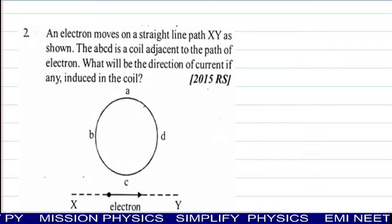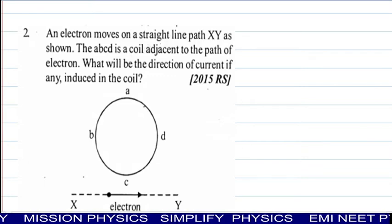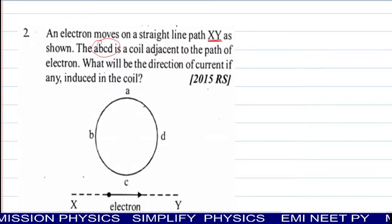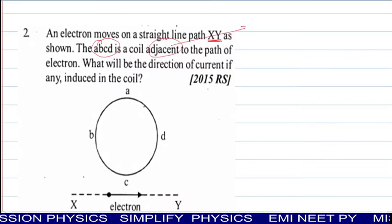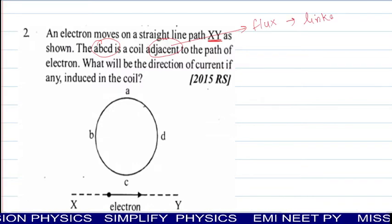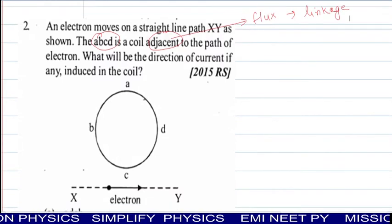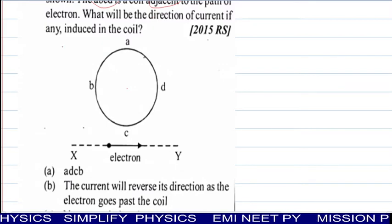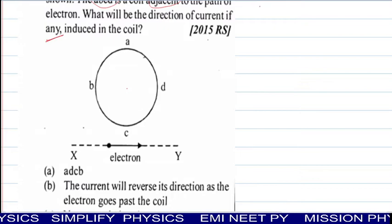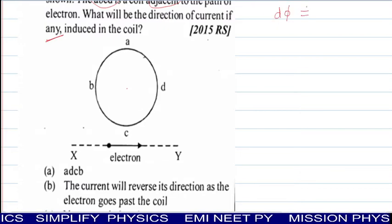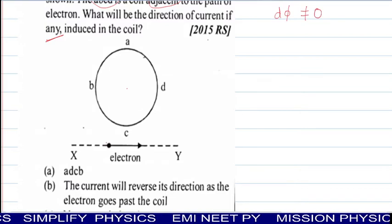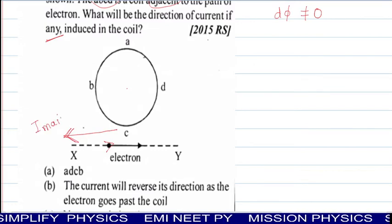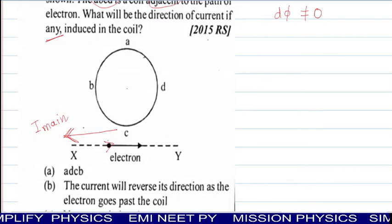Now check question number 2 of 2015. An electron moves on a straight line path XY as shown in the figure. The ABCD is a coil adjacent to the path of electron. Adjacent word means whatever flux is produced or magnetic field produced by flow of electron, that flux will be linked with the coil. What will be the direction of current induced in the coil?